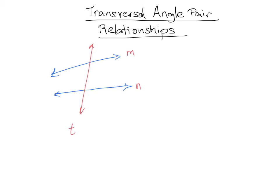The thing about the transversal — what makes it special — is that it forms some important angles. Our angles can be seen here and here, so it forms eight angles in total. We'll be talking about these eight angles right now.